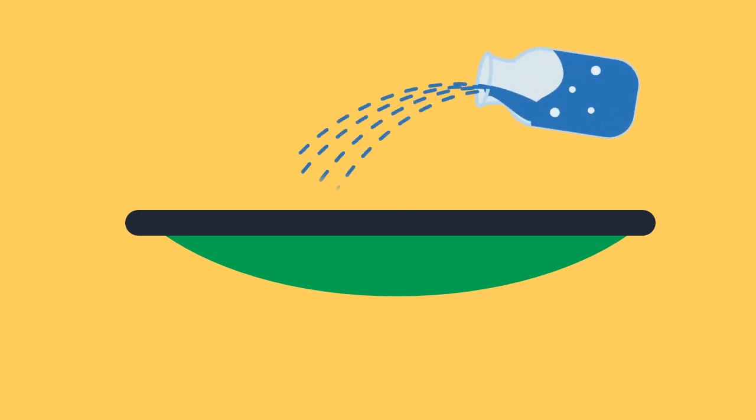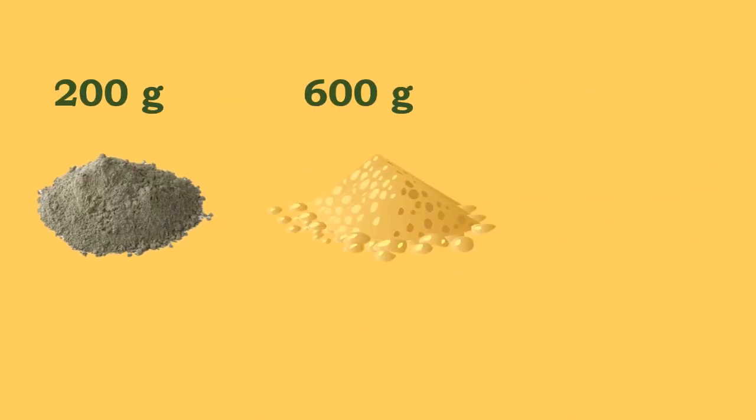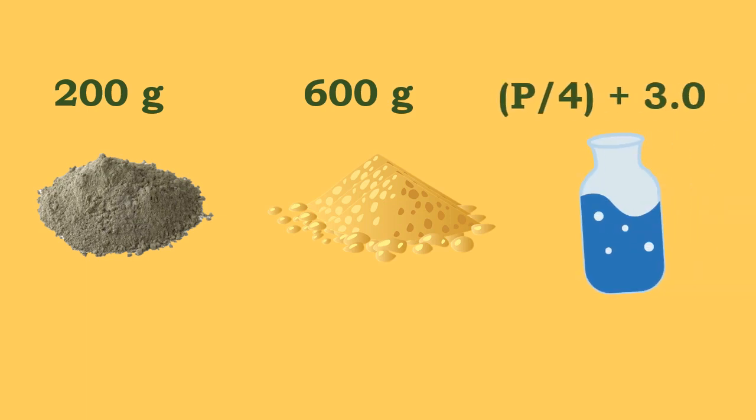The materials for each cube should be mixed separately. Generally, the quantities of cement, standard sand, and water are 200 grams, 600 grams, and (P/4) + 3.0 respectively, where P is the percentage of water required to produce a paste of standard consistency.